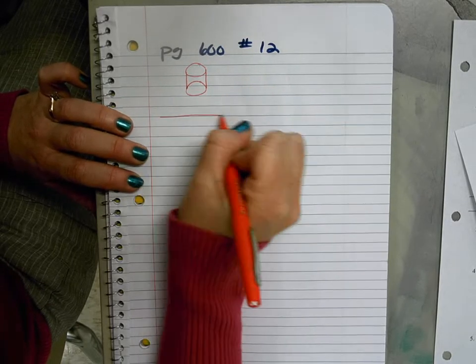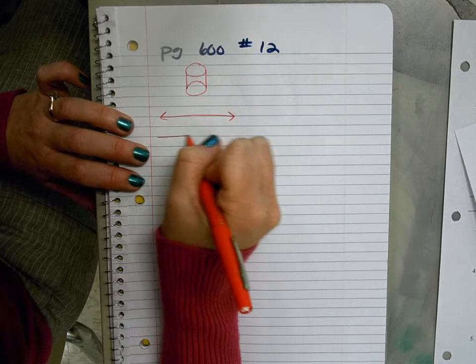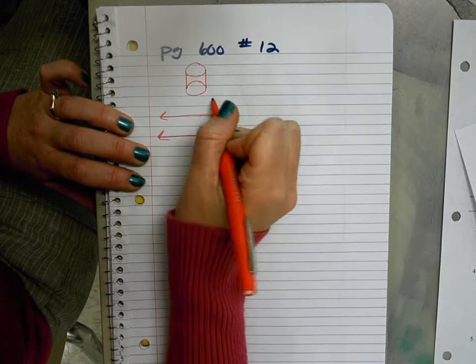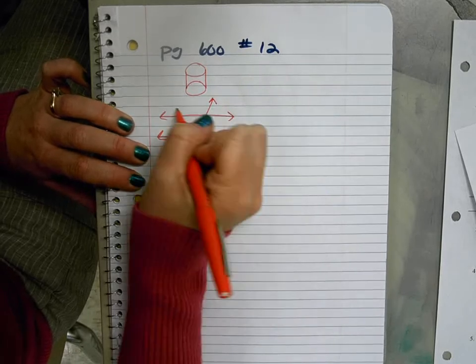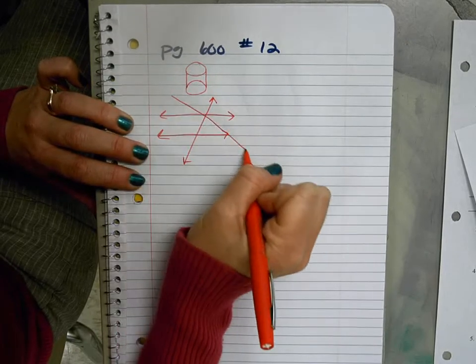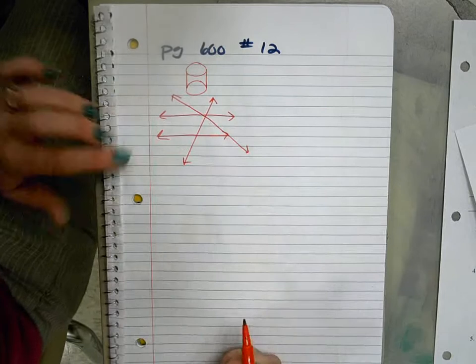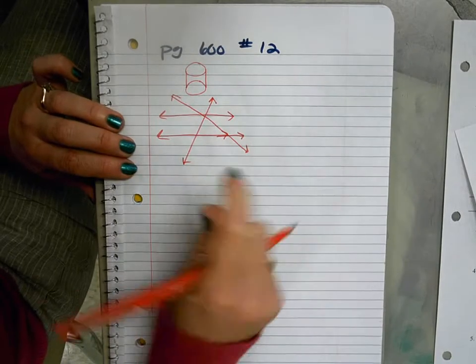The other topic will be those wonderful transversals that cut through parallel lines, maybe one transversal, maybe two transversals, and all of those wonderful angle relationships that show up. So that will be coming up on our quiz Thursday.